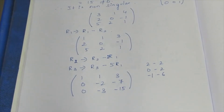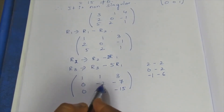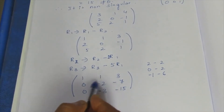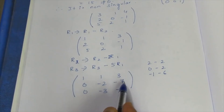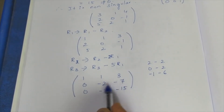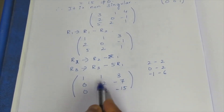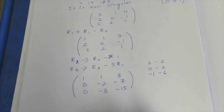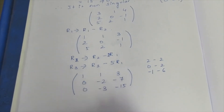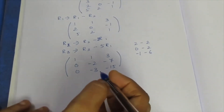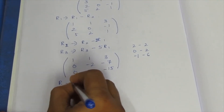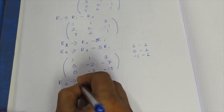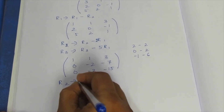Now we divide. Row 2 divided by minus 2. The pivot element at this stage is divided by minus 2 to make it 1. So we apply row operation: Rho 2 becomes Rho 2 divided by minus 2.